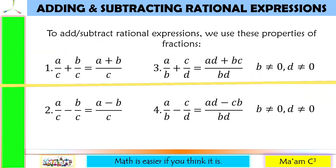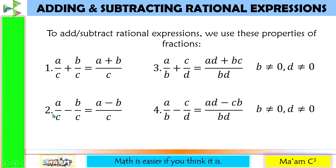How do we add and subtract rational expressions? To add or subtract rational expressions, we use these properties of fractions. Number 1 and number 2 are for rational expressions having the same denominators, while number 3 and number 4 are for rational expressions having different denominators. Today's lesson will focus on adding and subtracting rational expressions having the same denominators. To add rational expressions with the same denominators, we simply add the numerators and copy the denominator. And to subtract, we subtract the numerators and copy the denominator.